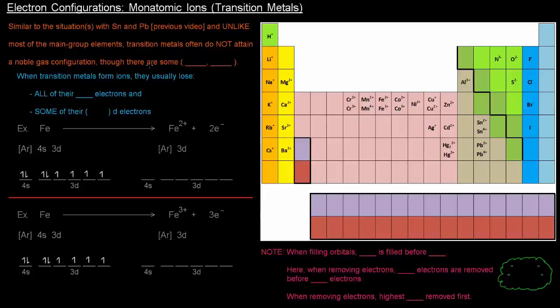Similar to the situations with tin and lead that were discussed in the previous video, and unlike most of the main group elements, transition metals often do not attain or acquire a noble gas configuration, though there are some examples.